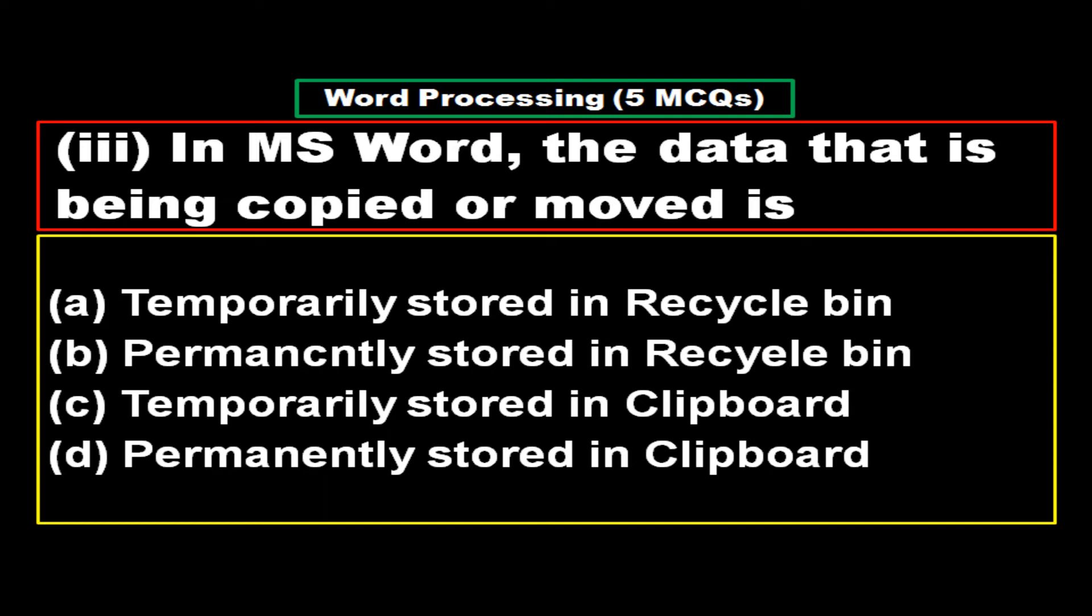In MS Word, the data that is being copied or moved is: Options - A - Temporarily stored in Recycle Bin, B - Permanently stored in Recycle Bin, C - Temporarily stored in Clipboard.